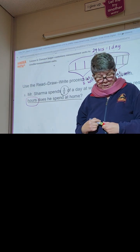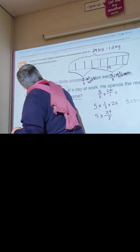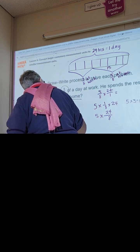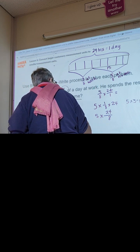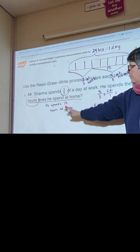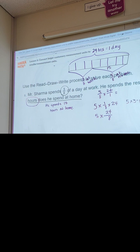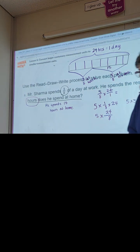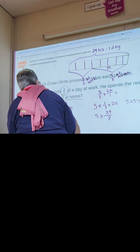He spends 15 hours at home. We write our sentence: he spends 15 hours at home. Make sure you have this all written down in your book. If you didn't write it as fast as I said it, you can pause and get it written down — I'm going pretty fast so the video isn't too long, but you can always pause. We're going to move on to number four.